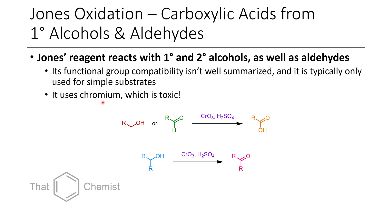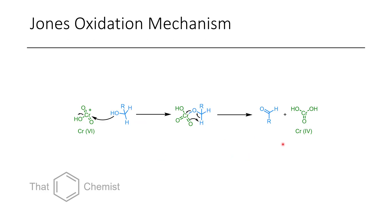The disadvantage of this method is also that it uses chromium, which is toxic, as we discussed in the PCC oxidation last episode. The mechanism of a Jones oxidation begins with chromium trioxide being protonated by sulfuric acid. That then makes it possible for the hydroxy group to attack the chromium species. Once the chromium has been attacked, it's possible for the chromium to abstract a hydride.